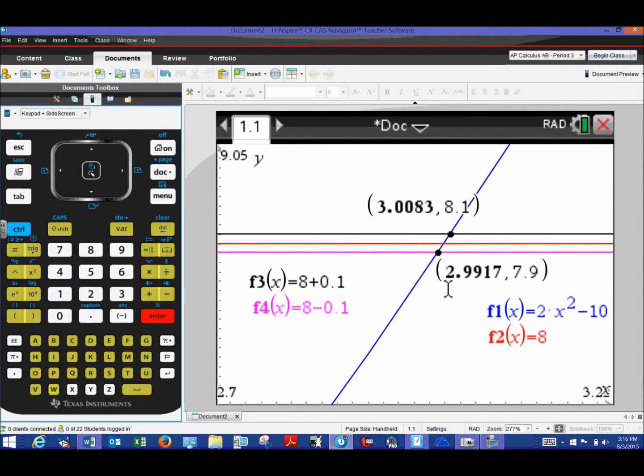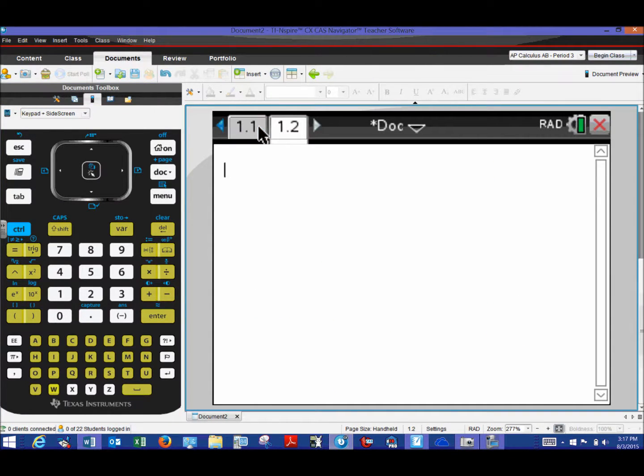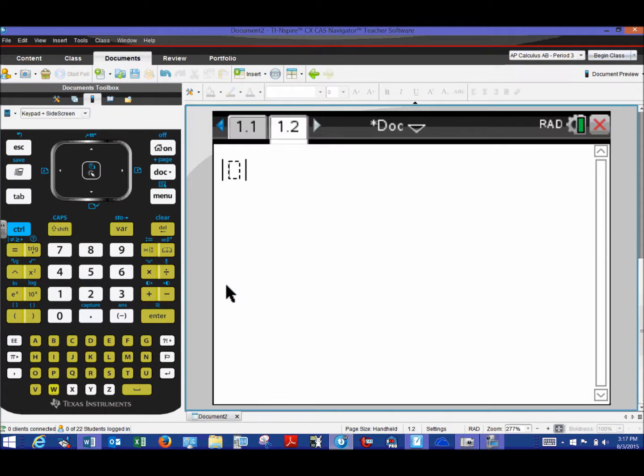Hit enter and notice that that coordinate has now become bold. We'll do the same thing with the other x coordinate, control menu, store, and we'll call that x2 and now it's stored. Now all we need to do is go to another page, control doc, we'll make an additional page and we'll make this a calculator page. Then we'll just take the absolute value of those two particular values. We're going to go into our template, choose our absolute value, and then we'll take x1 and subtract our target value for c which is three and then we'll do the same thing with x2. Notice when I type in x2 as I did x1 it does become bold which is just the calculator basically saying hey I know that value, it was stored, and then there's my result.